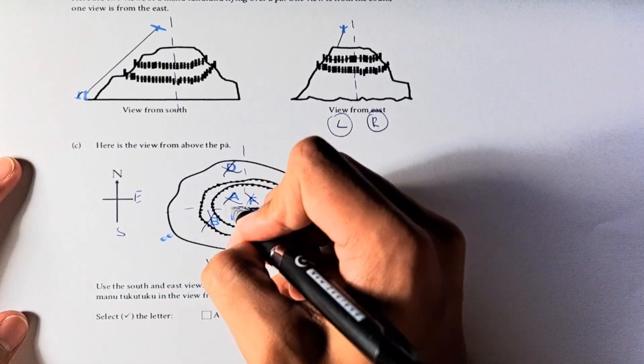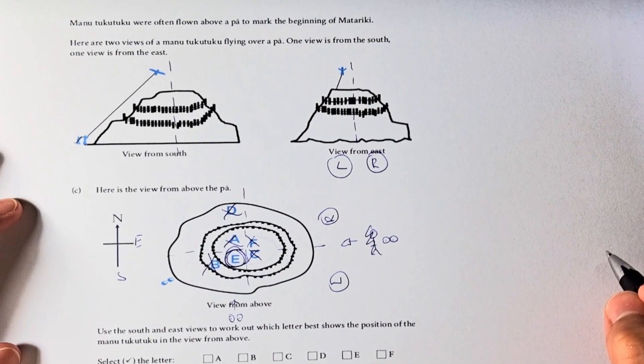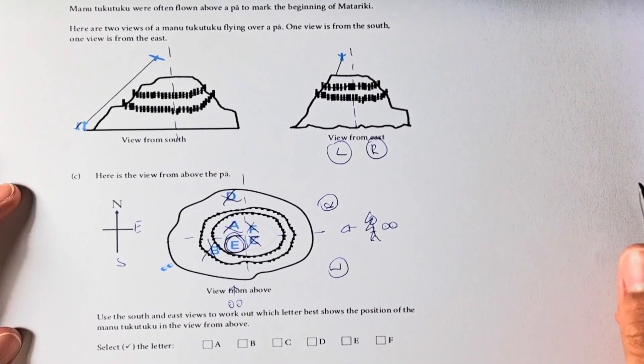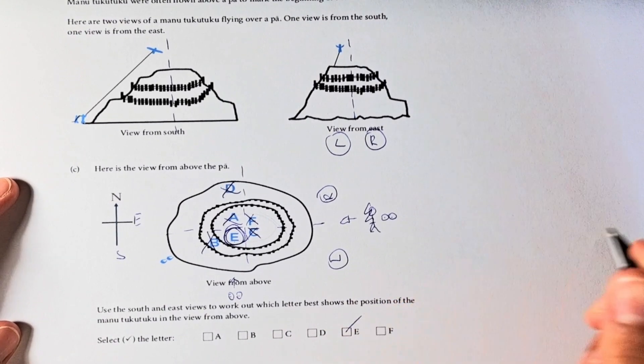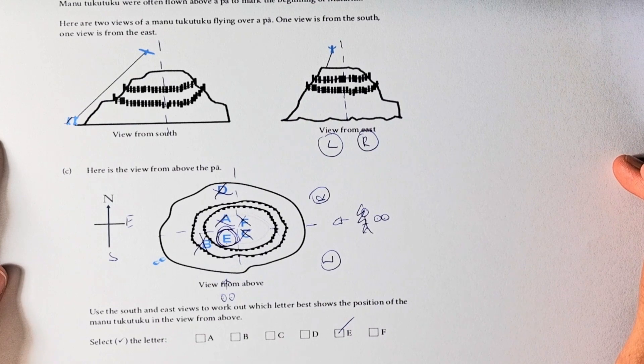E is the only answer we are left with. So therefore, we are going to tick E. This is option two.